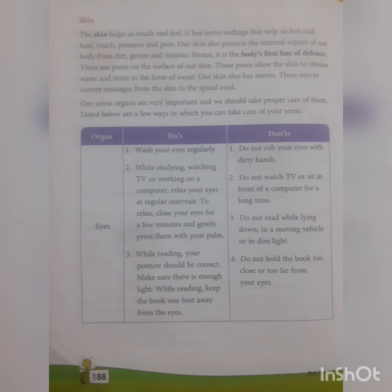The third point is while reading, your posture should be correct. That is very compulsory. Make sure there is enough light while reading. Keep the book one foot away from the eyes. That's why always in the school it is said sit straight, so that means if you sit straight there will be enough distance between your book and you. Posture also plays a very important role for keeping your eyes healthy. And always try, wherever you are learning, there should be enough light. Don't try to learn in the dark room.